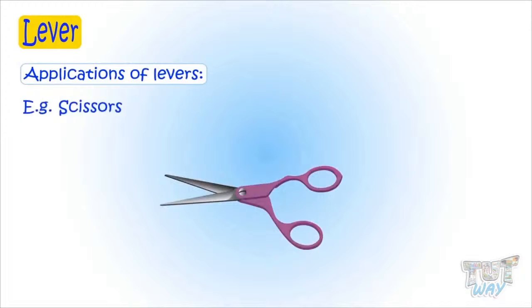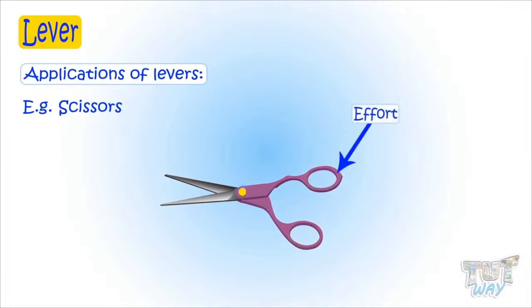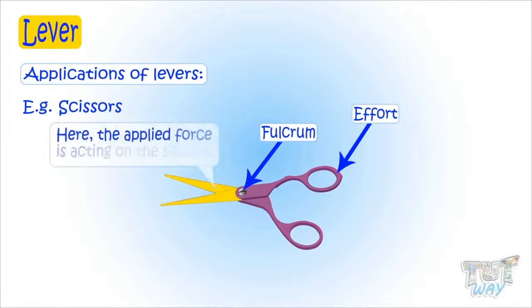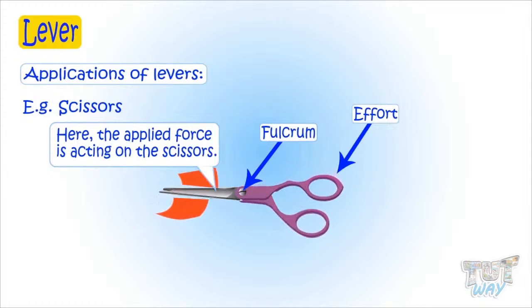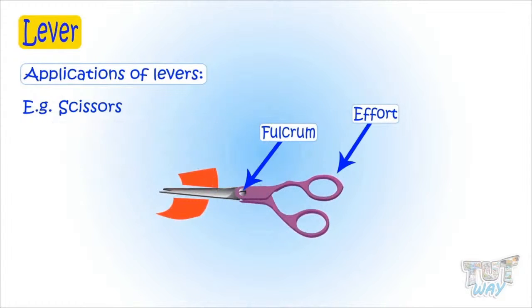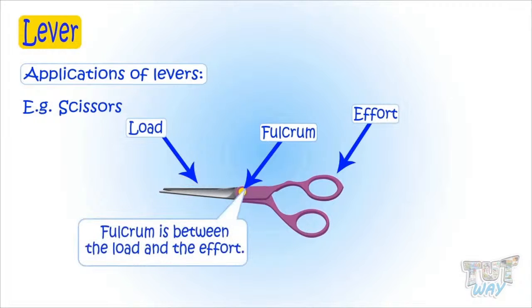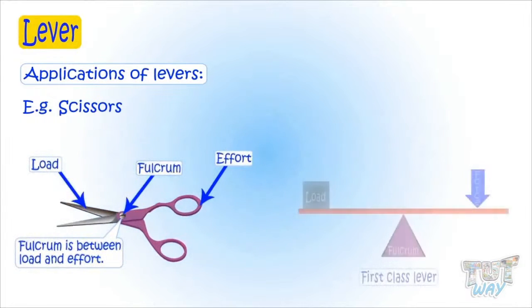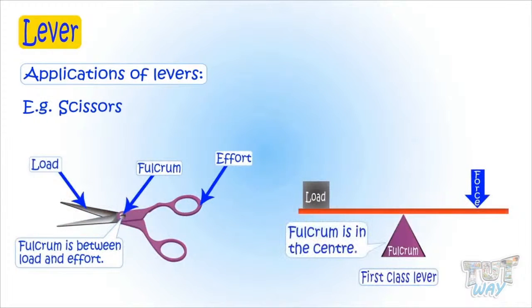Here we have a pair of scissors. This is the point where you apply force, so this is effort. This is the fixed support or fixed point — this is known as fulcrum. And this is where the applied force acts on an object; we apply force here and it cuts the paper here. So this is the load point. Here, fulcrum is between the effort and the load, so this is an example of a first class lever as fulcrum is in the center.